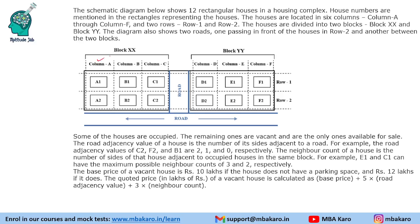So these are 6 columns: A, B, C, D, E, F, and there are 2 rows, row 1 and row 2. The house positions are A1, A2, B1, B2, and so on. There are 2 blocks: block X consists of columns A, B, C and block Y consists of columns D, E, and F. There are 2 roads — one in between the blocks and another road in front of row 2.